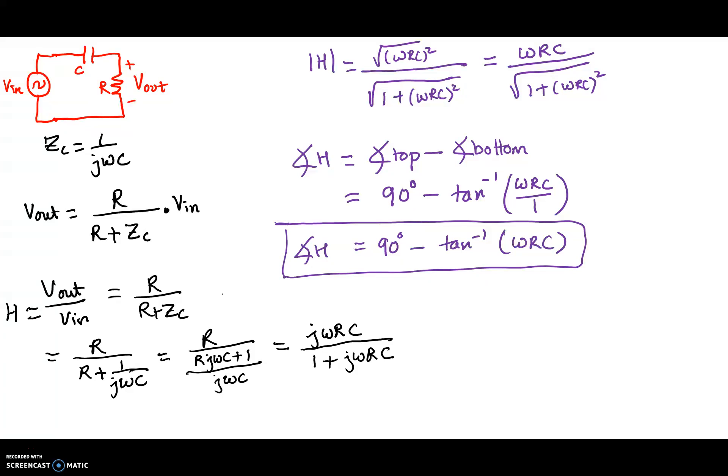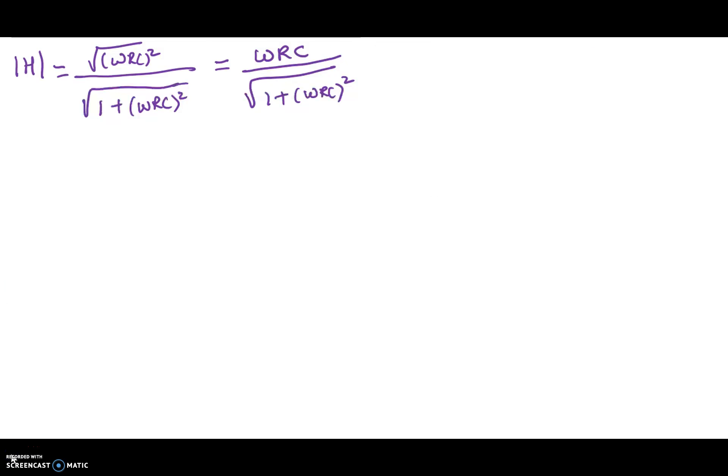We saw in our previous video of the RC circuit, where we looked at the voltage across the capacitor, that the transfer function magnitude caused the circuit to act as a low-pass filter. Now let's focus on this particular circuit — just the magnitude portion — and see what happens to the magnitude of the transfer function as we put in signals on V in starting at DC and moving towards a really high frequency. I've copied the transfer function here.